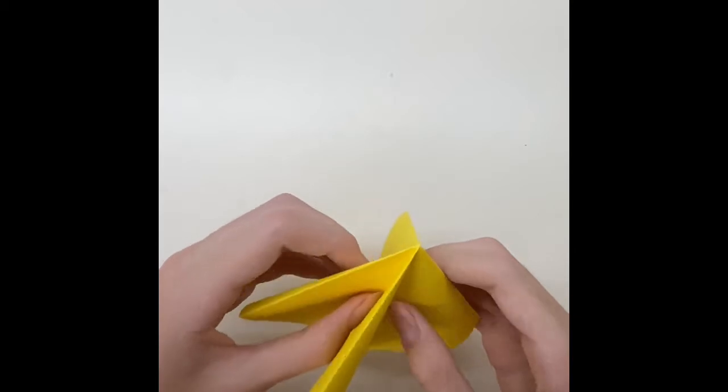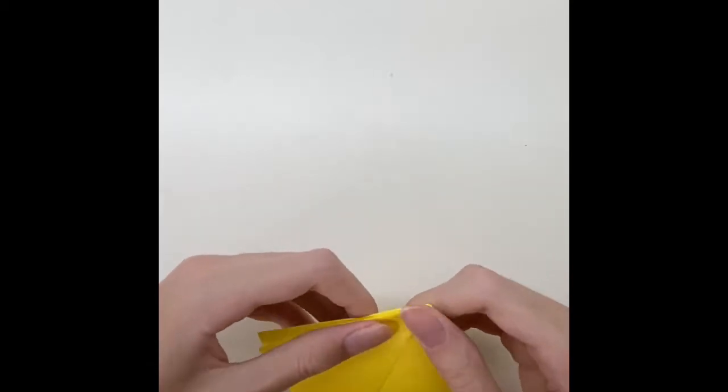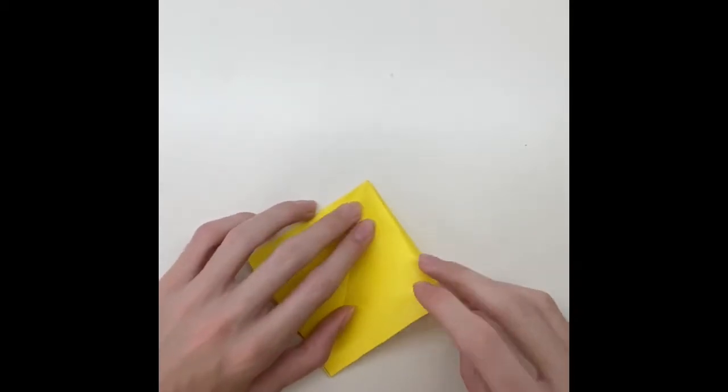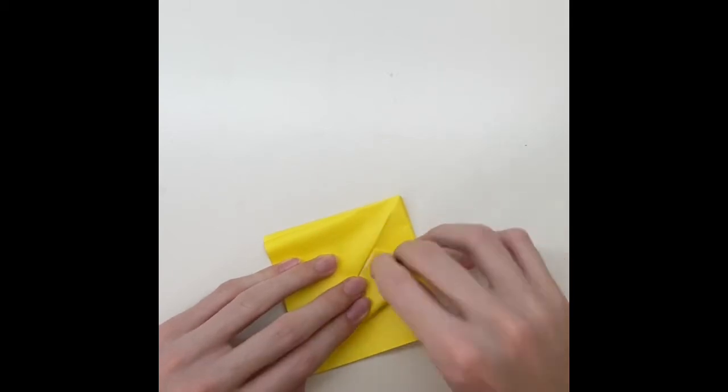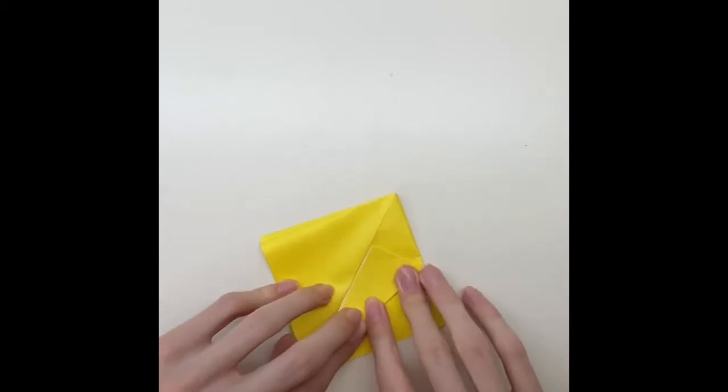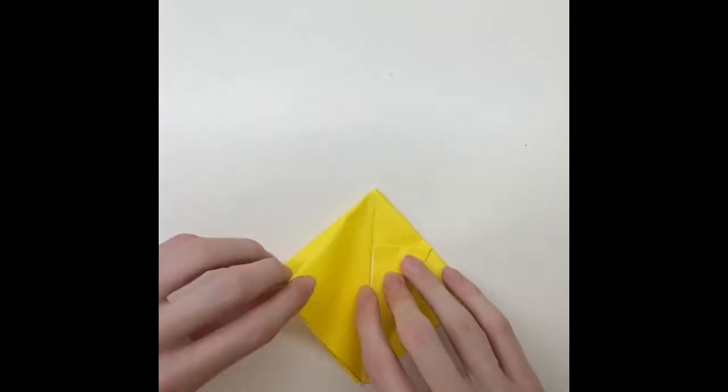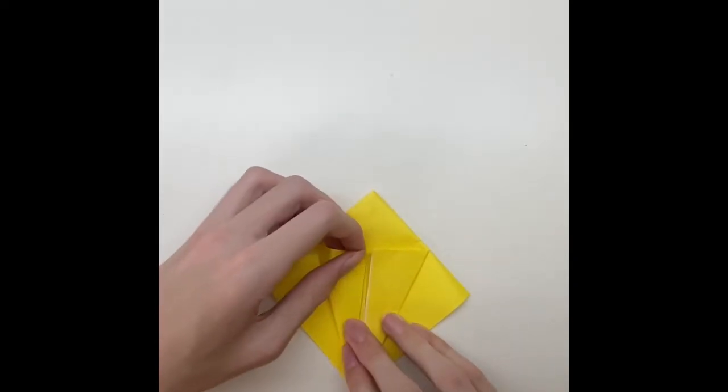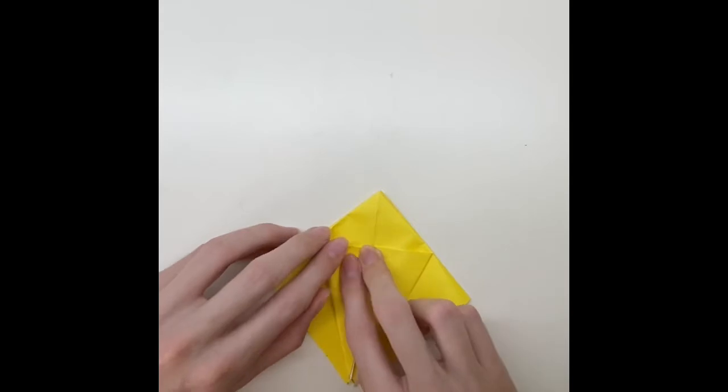After that, fold it to a square. Then fold one part of the paper and clip the line from both sides. Then open it and change the direction. After that, do the same thing on the other side.